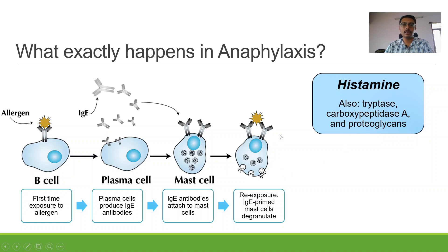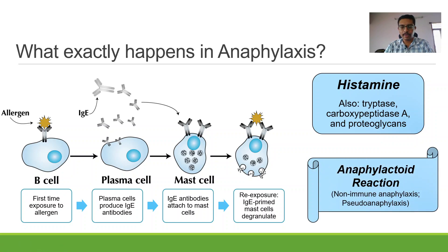Before we move on, there is another term in addition to anaphylaxis: the anaphylactoid reaction. Anaphylactoid reaction is the same thing except that there is no allergen involved. In the absence of an allergen or re-exposure, if there is spontaneous degranulation of mast cells leading to release of large quantities of histamine and various other symptoms similar to anaphylaxis, it is called an anaphylactoid reaction. It is also called non-immune anaphylaxis and pseudo-anaphylaxis.